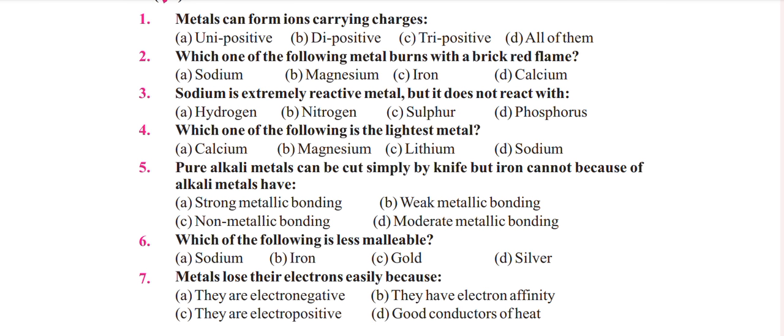silver. Question 7: Metals lose outer electrons easily because they are electronegative, electropositive, they are electro positive, they are conductors of heat.